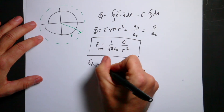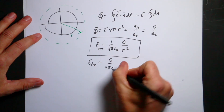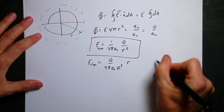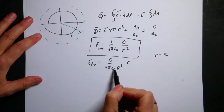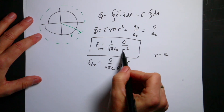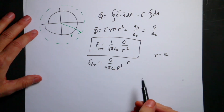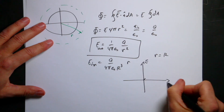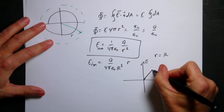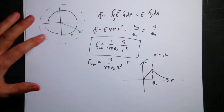Writing down the results: E_inside equals Q over (4 pi epsilon naught R cubed) times r, and E_outside equals Q over (4 pi epsilon naught R squared). At r equals R, both expressions give the same value, confirming continuity at the surface. If you graph E as a function of r, it increases linearly inside the sphere and then decays as one over R squared outside, with the peak at the surface radius R.